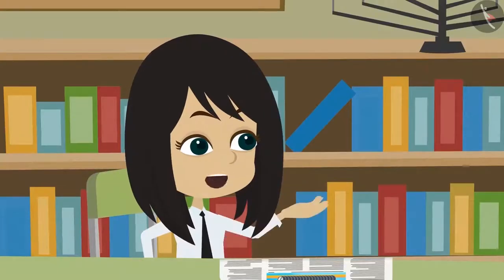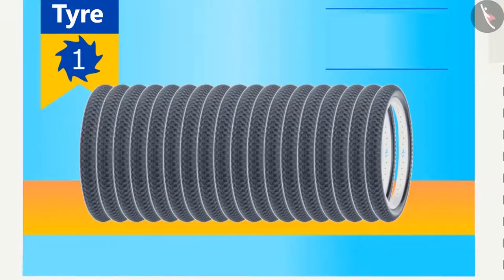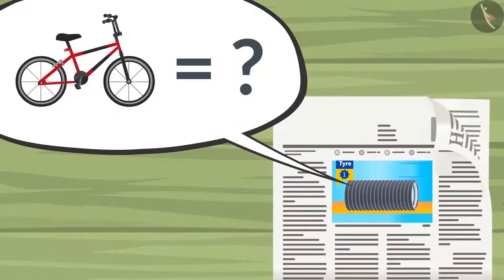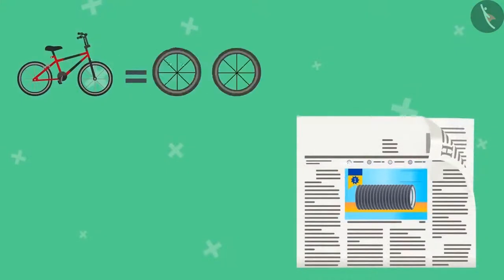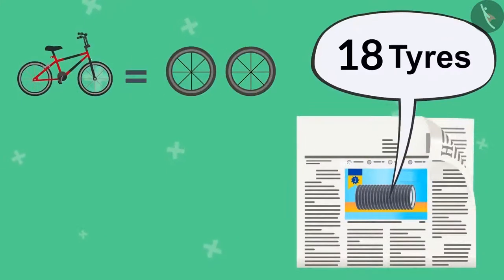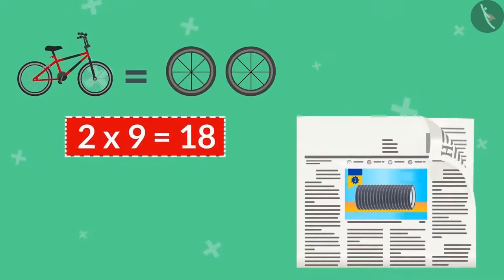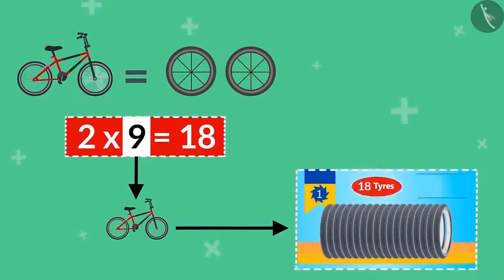If these are bicycle tyres, can you tell me how many bicycles do they belong to? A bicycle has two tyres, and there are a total of 18 tyres. Two nines are 18. This means these tyres belong to nine bicycles.